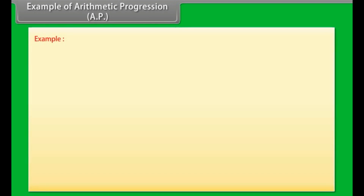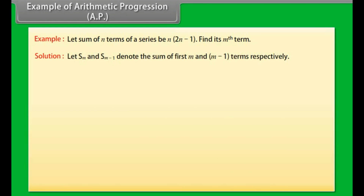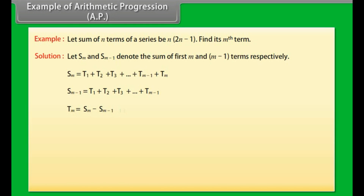Example: Let the sum of N terms of a series be N(2N − 1). Find its Mth term. Solution: Let SM and SM−1 denote the sum of the first M and M−1 terms respectively. TM = SM − SM−1. On solving, we get TM = 4M − 3.